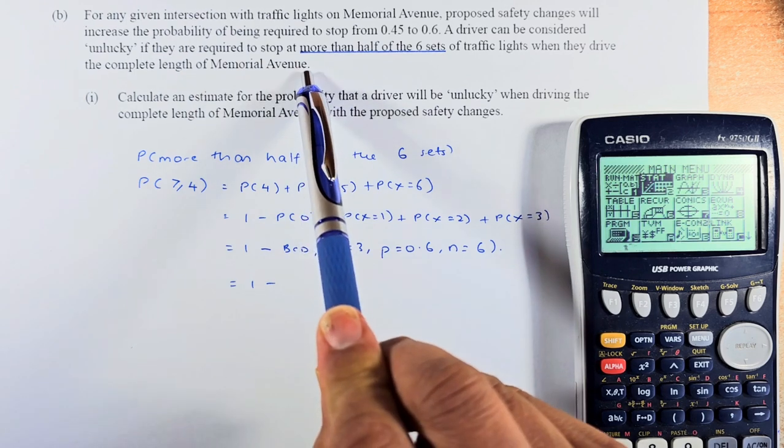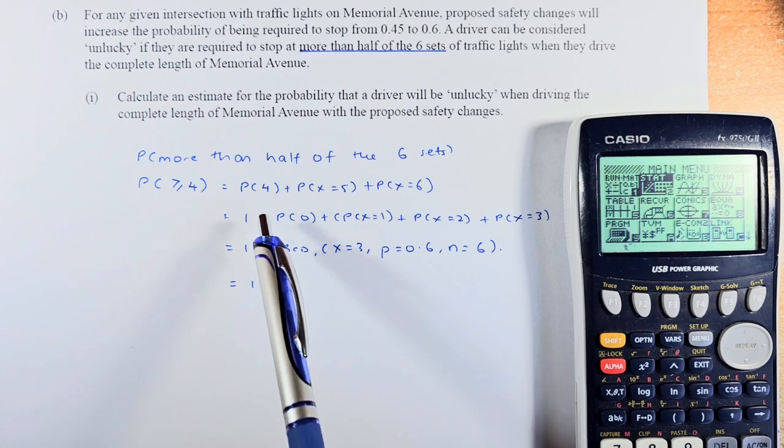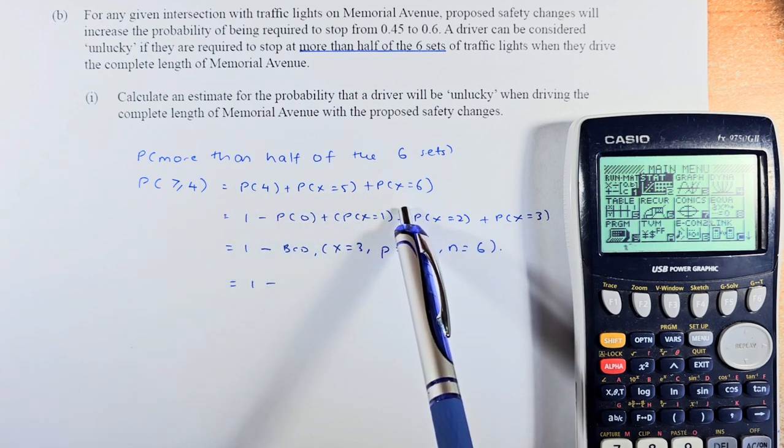So, the most important thing: more than half. That will be 3 or more. More than half means more than 3, so it will be 4, 5 and 6. So that's the probability we can calculate. The probability that's unlucky is 4, 5 and 6.